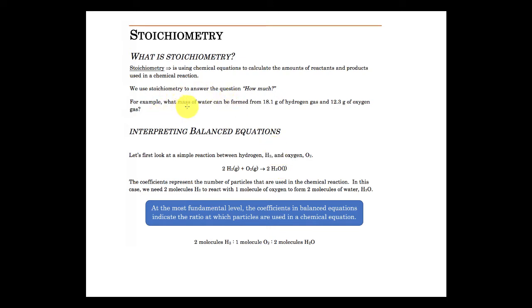So we're going to start answering questions like what mass of water is going to be formed when you have 18.1 grams of hydrogen gas reacting with 12.31 grams of oxygen gas. So those are the kind of questions we're going to be looking at. We're going to start using a lot of numbers here, so using our significant figure rules are going to be important as well.